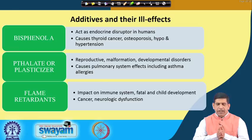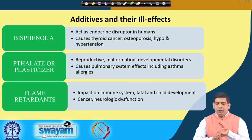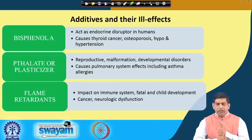BPA is short for bisphenol A. Phthalates or plasticizers impact the reproductive system, can cause malformation and development disorders, and also cause pulmonary system effects including asthma and allergies. Flame retardants impact the immune system, can be fatal, and impact child development — they can cause cancer or neurological dysfunction as well. These are the three broad categories of additives used in plastics and their ill effects.